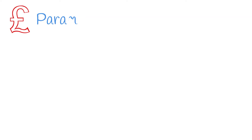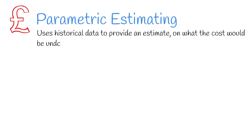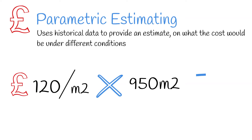Moving on, we have parametric cost estimating. This method uses historical data to provide an estimate of what the project would cost under different conditions. It's achieved by identifying the unit cost from past projects, and scaling for the project that you're estimating.